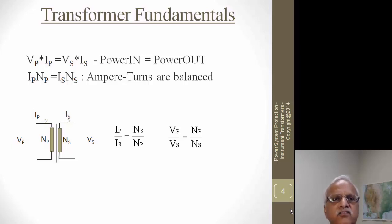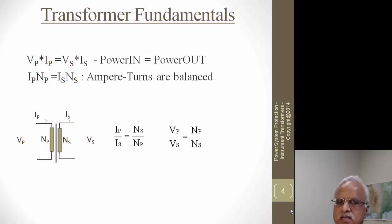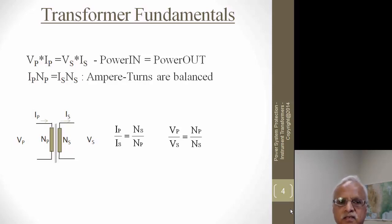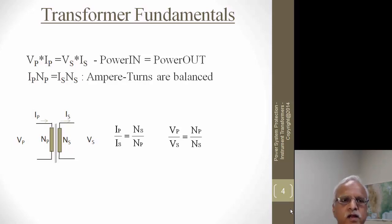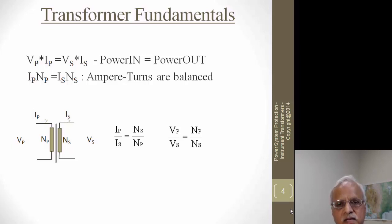Before getting into current transformers, let's look at transformer fundamentals. Whether it is a voltage or current transformer, the power into the primary winding equals the power out: VP times IP must equal VS times IS, where P is the primary winding and S is the secondary winding. The ampere turns must also be balanced: IP times NP must equal IS times NS.